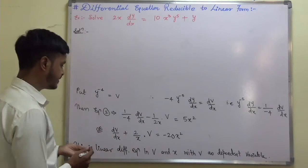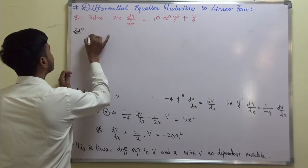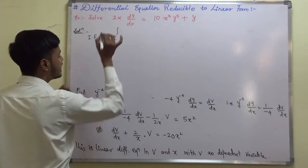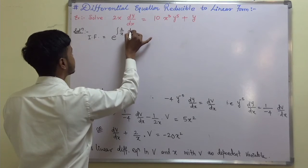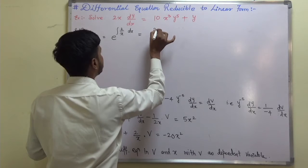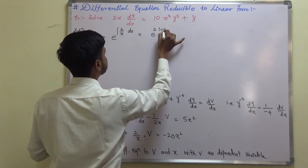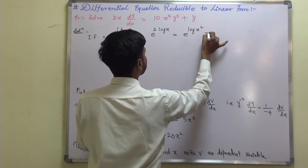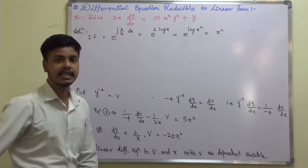The integrating factor is e^(∫(2/x)dx) = e^(2 ln x) = e^(ln x²) = x².